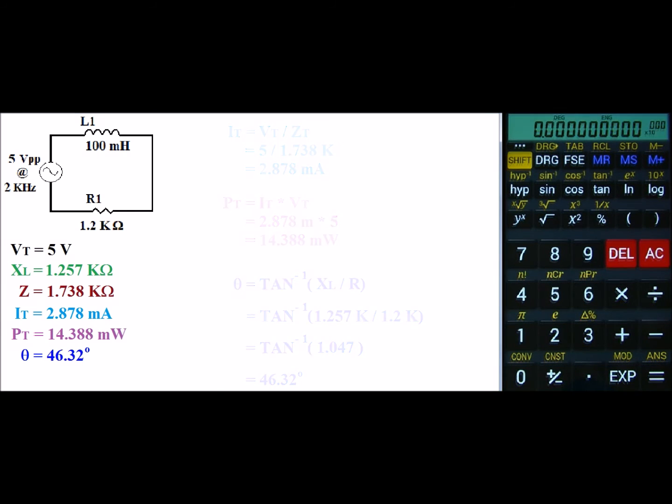Now that we got the totals, let's go ahead and find the individual values. First up is our resistor. This is a series circuit, so we know that current remains the same. So my IR will be equal to IT, which is 2.878 milliamps.